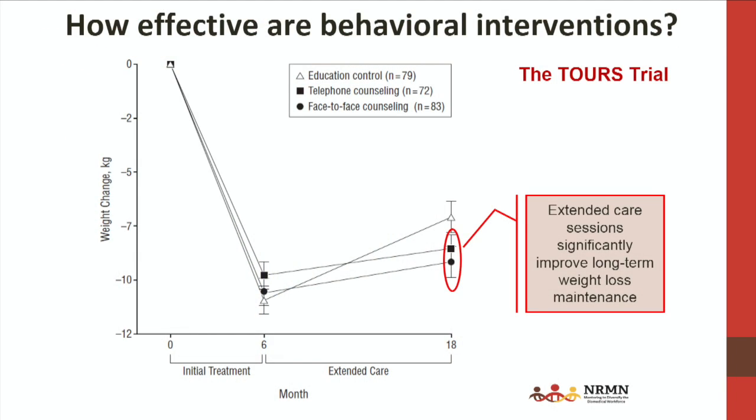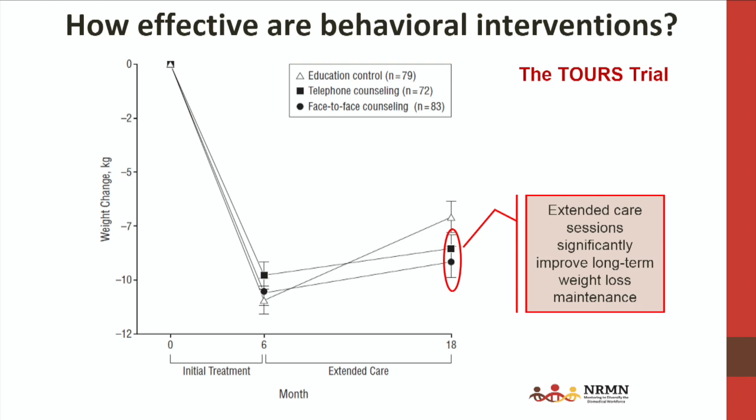Another study to highlight is the TOURS trial, which focused a bit differently on weight loss maintenance. Participants came in for a weight management program, lost their weight during the first six months, and were then randomized to an extended care program. The goal was to try to prevent weight regain. There were three arms — a control arm, and two extended care programs, one delivered by phone and one in person. Both extended care programs had significantly less weight regain than the control condition. This illustrates that weight loss maintenance can be achieved, but it's really important to provide that ongoing support to people to make that happen.